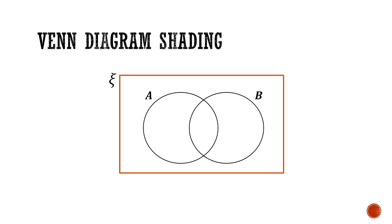On to success criteria 2. We're now looking at how to shade a given region of a Venn diagram. Let's run through some simple shading first. If you're asked to shade the region of A, just simply shade everything inside A. Likewise, if you're asked to shade the region B, just shade everything inside B.